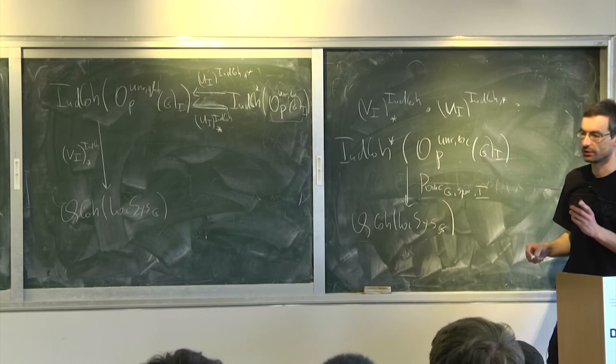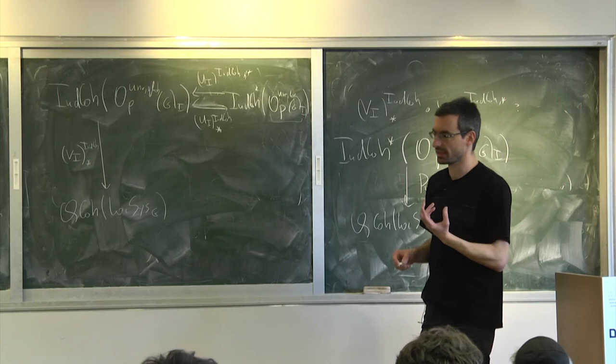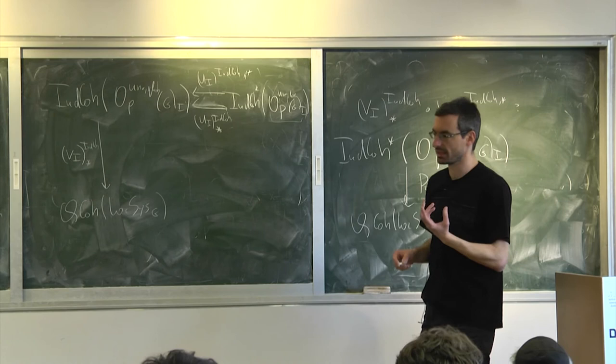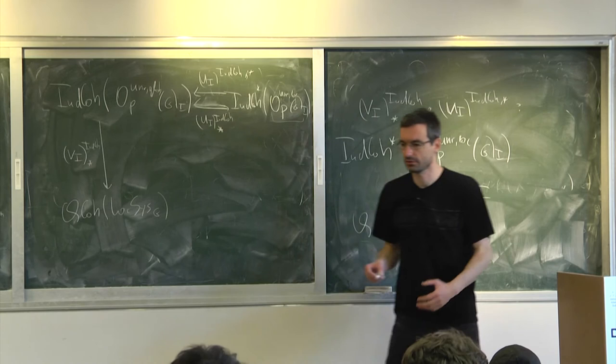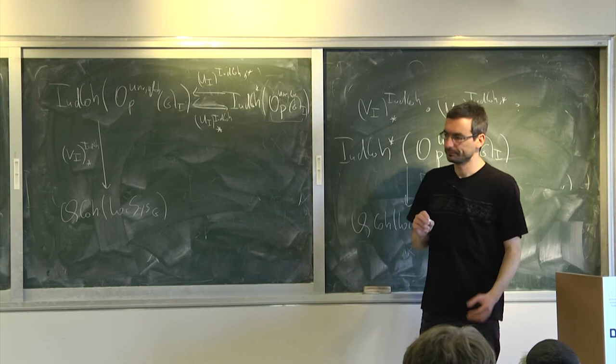The difference between the star and shriek versions — they're really different — is the indication of why you can't directly make sense of these things in infinite type. You get really two different categories.